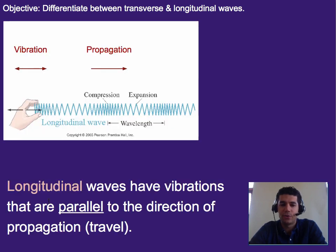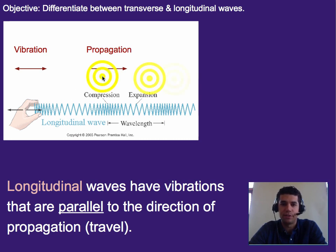We can see in the video that in order to make a longitudinal wave, we have to vibrate our hand back and forth — it's more like a pulse. Really what we're doing is the vibration is parallel to the direction of propagation. The direction of propagation is just the direction the wave is moving or traveling. So if the wave is traveling to the right, then our vibrations need to be to the left and right — parallel to the direction of propagation.